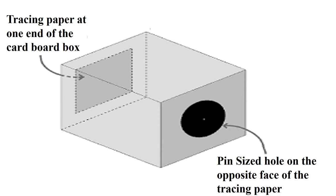We have taken a cardboard box. On one face, a pin-sized hole is made. On the opposite face, tracing paper is placed with the help of a thread or a rubber band. This is the simplest way to make a pinhole camera at your home.